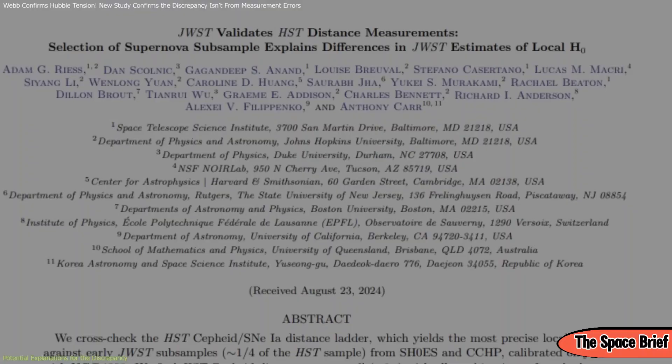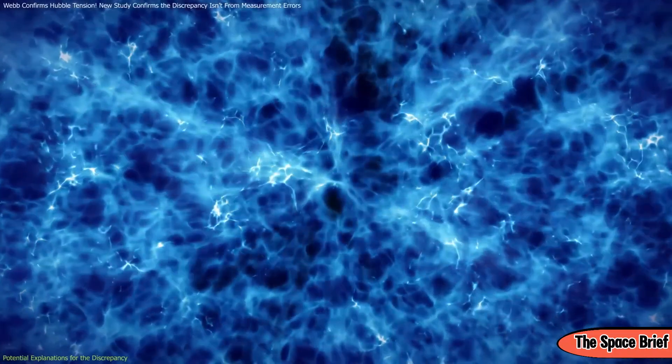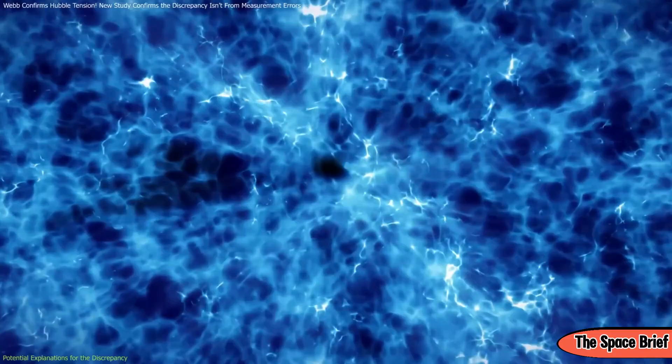This early acceleration could lead to a smaller sound horizon, the scale over which density fluctuations in the early universe were correlated, resulting in a higher Hubble constant value inferred from CMB data.